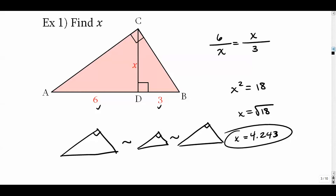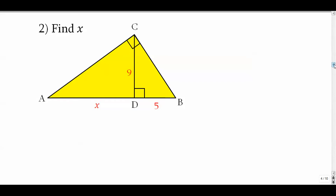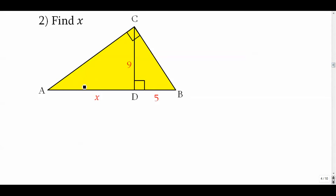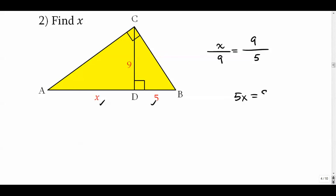In example 2, we again have an altitude — but this time it's a number, not the unknown. Put 9 in the bottom-left and top-right positions, and put x and 5 in the other slots. Cross-multiplying gives 5x = 81, so x = 16.2. You can check: 16.2 × 5 = 81. ✓